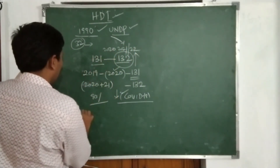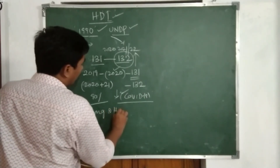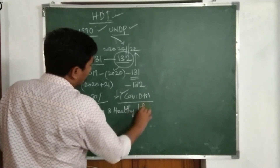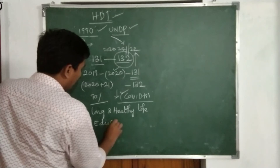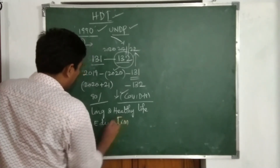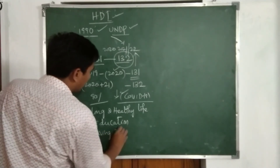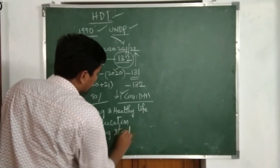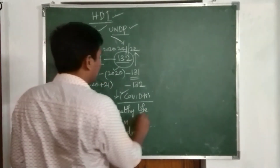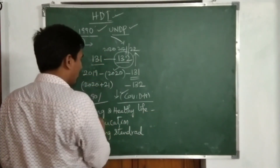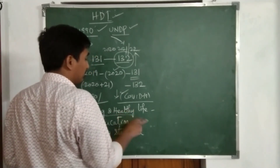We will talk about the three dimensions. First: long and healthy life — not just long life, and not just healthy life, but both long and healthy life. Second: education. Third: living standard.